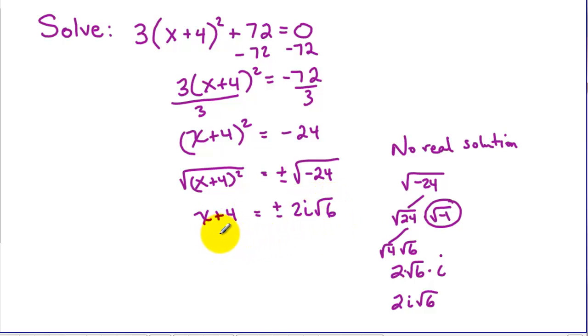So we've got plus or minus 2i radical 6. And now we can solve for x by subtracting 4. And our final answer here would be negative 4 plus or minus 2i radical 6. So we have two complex solutions here, negative 4 plus 2i radical 6 and negative 4 minus 2i radical 6. And since we have the i here, these are both complex numbers.